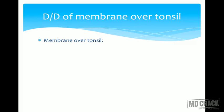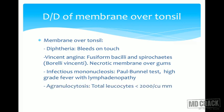The differential diagnosis of membrane over tonsil includes diphtheria — the membrane bleeds when removed. Vincent's angina is caused by fusiform bacilli and spirochetes known as Borrelia vincenti, forming a necrotic membrane over gums and tonsils. Infectious mononucleosis — the diagnostic test is the Paul-Bunnell test, with high-grade fever and lymphadenopathy. Agranulocytosis, leukemia, and carcinoma of the tonsils can also form a membrane.